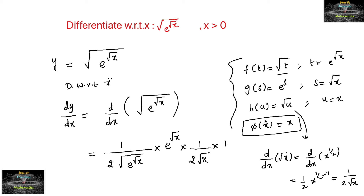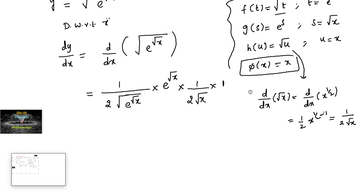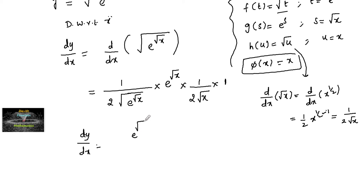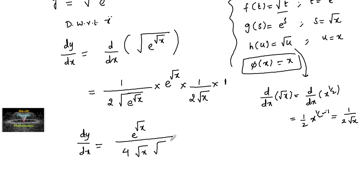So we can now give the final answer: dy/dx = e^(√x) divided by 4√x times root of e^(√x).